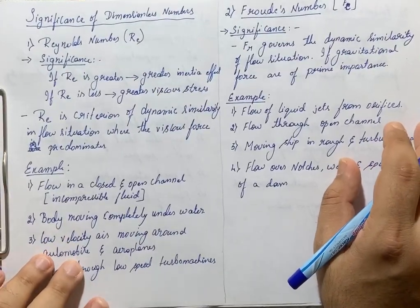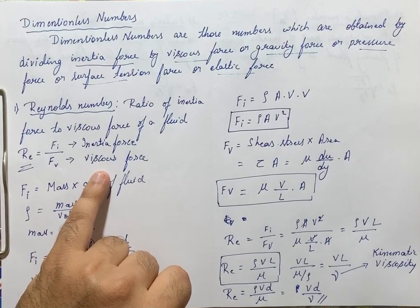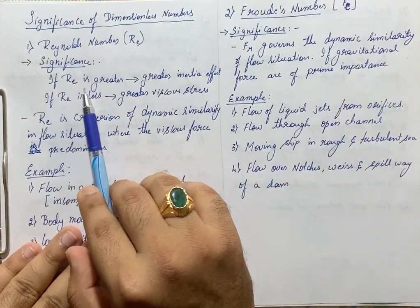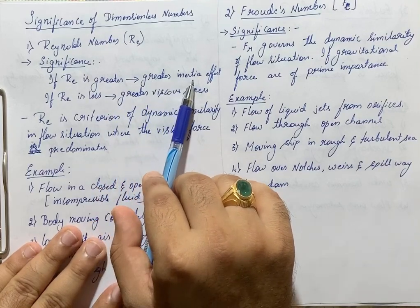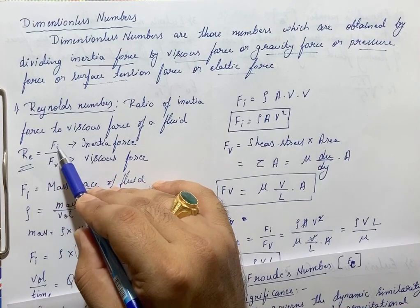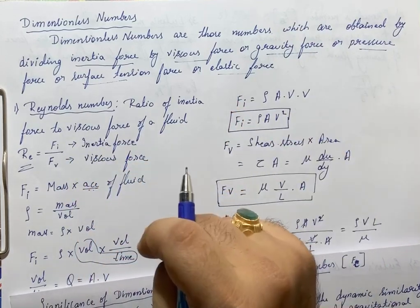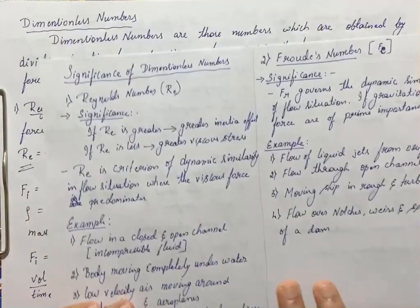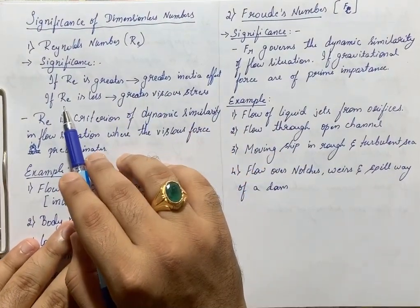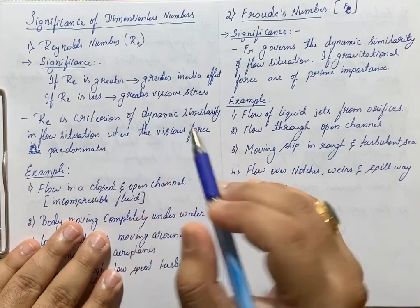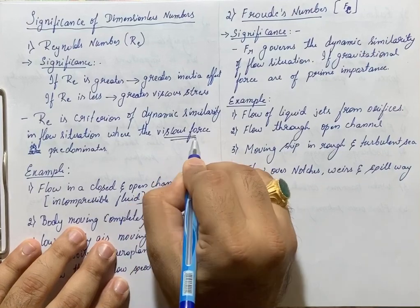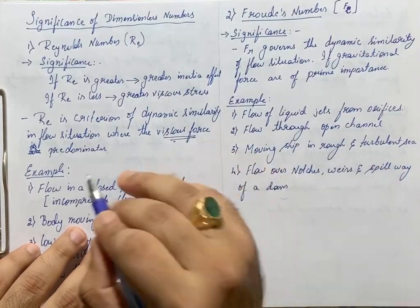The significance of Reynolds number: it is the ratio of inertia force to viscous force. If Reynolds number is greater, the inertia force is predominant over viscous force. If viscous force is more than inertia force, Reynolds number will be less. Reynolds number is a criterion for dynamic similarity in flow situations where viscous force is predominant.